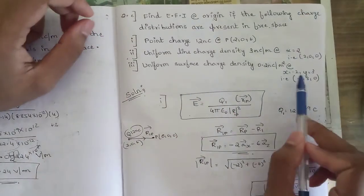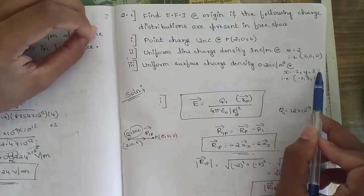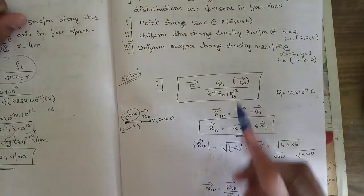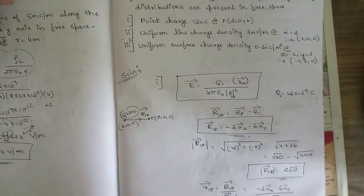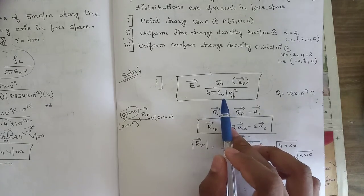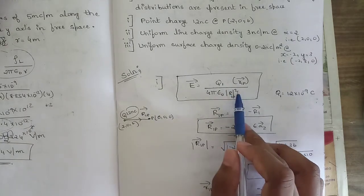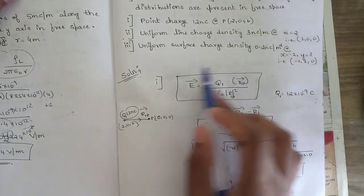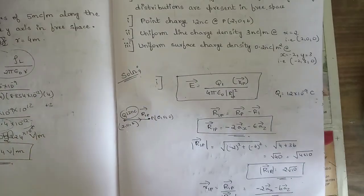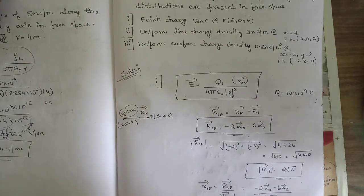We find the electric field intensities one by one. The formula for E is: E equals Q divided by 4πε₀ times the magnitude of r₁p squared, times the unit vector r̂₁p. Since we are in free space, the permittivity is absolute ε₀. For conceptual derivation of this formula, refer to the concept video available on screen.